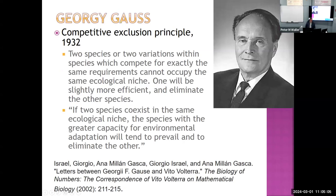In the early 1930s, Georgie Gause from the Soviet Union conducted careful microbial growth experiments as part of his PhD, in which he measured populations over time and observed the effect of two species on each other. He stated that two species or two variations within a species which compete for exactly the same requirements cannot occupy the same ecological niche — one will be slightly more efficient and eliminate the other species.